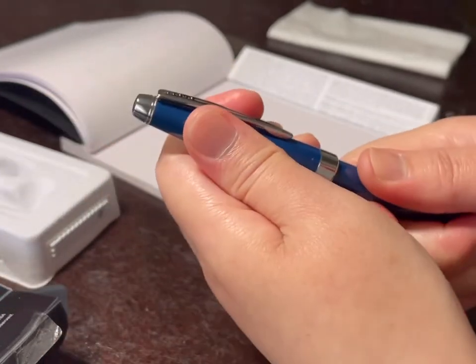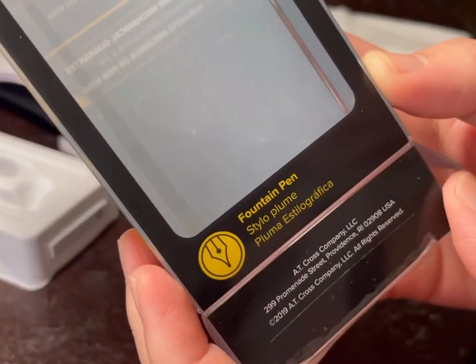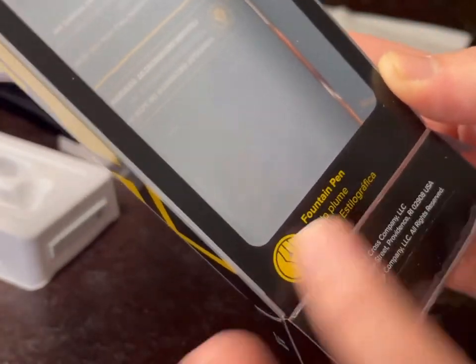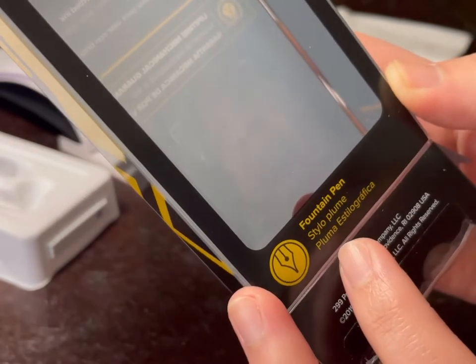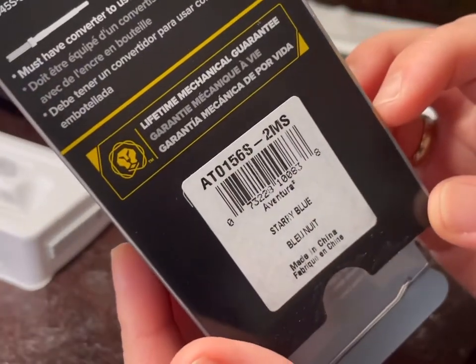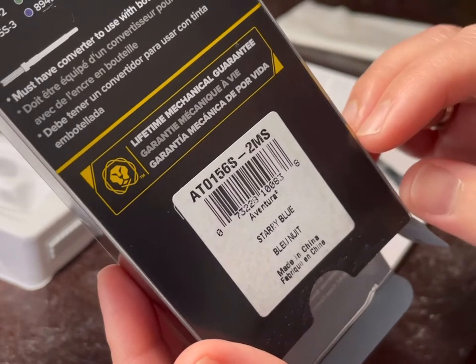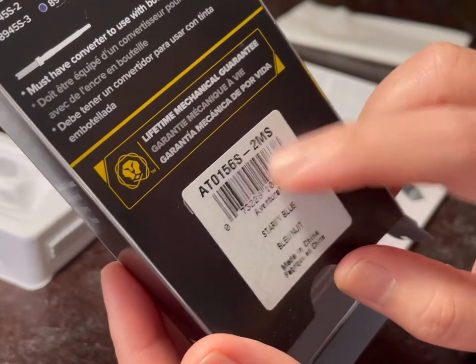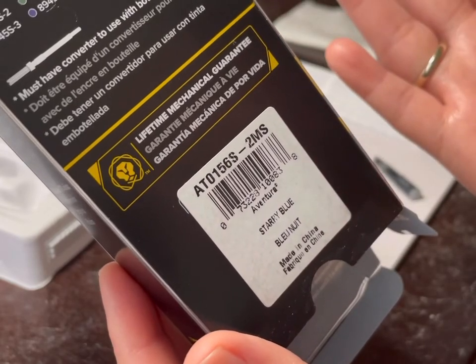So this is the box that it comes with. And it just says here fountain pen, and I don't see anywhere the size of the nib for some reason. So I am basically just judging it from the price tag. It says 2ms. So I am guessing maybe this is a medium pen, but I don't know.